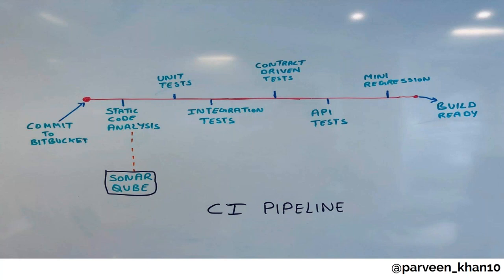I suggested adding a mini regression test at the end of the pipeline. Instead of running the full regression test on the pipeline, I proposed a combination of smoke/sanity checks plus some important regression checks. The reason: I didn't want to add a large amount of tests and wait three or four hours. Since DevOps is all about quick feedback, I wanted to start small, see how it runs, how long it takes, and slowly build up by adding more tests.